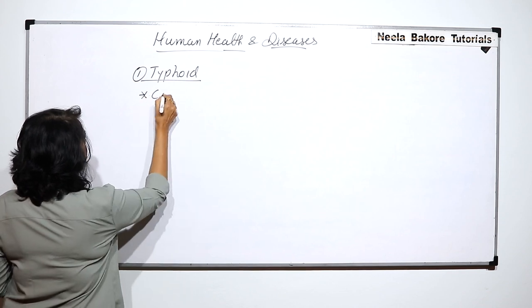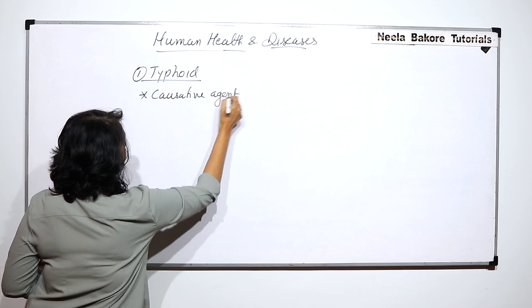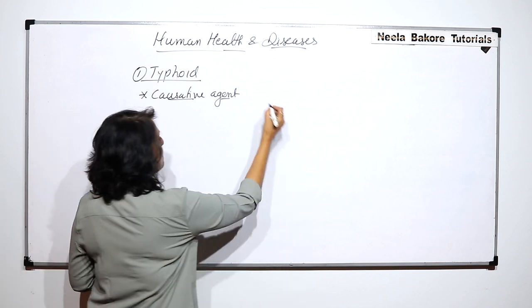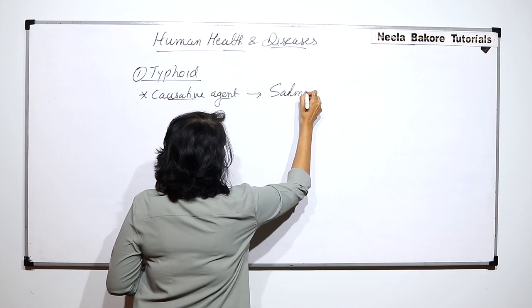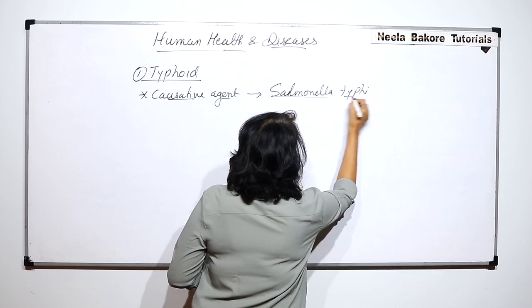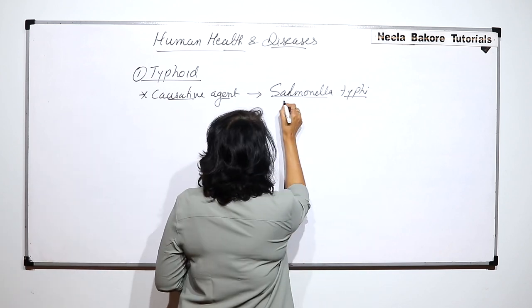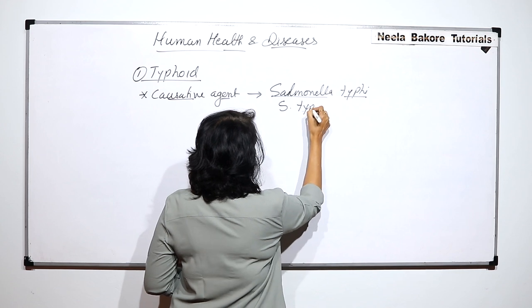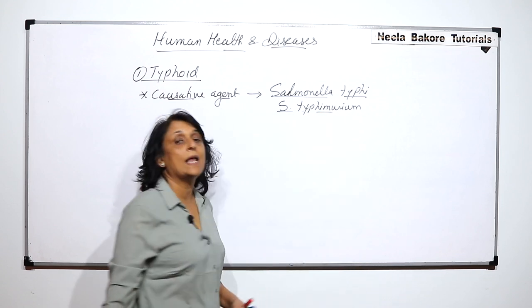The causative agent — that means the pathogen which is responsible for causing the disease — it's a bacterium and its name is Salmonella typhi. It can also be written as Salmonella typhimurium, but most commonly it is written as Salmonella typhi.